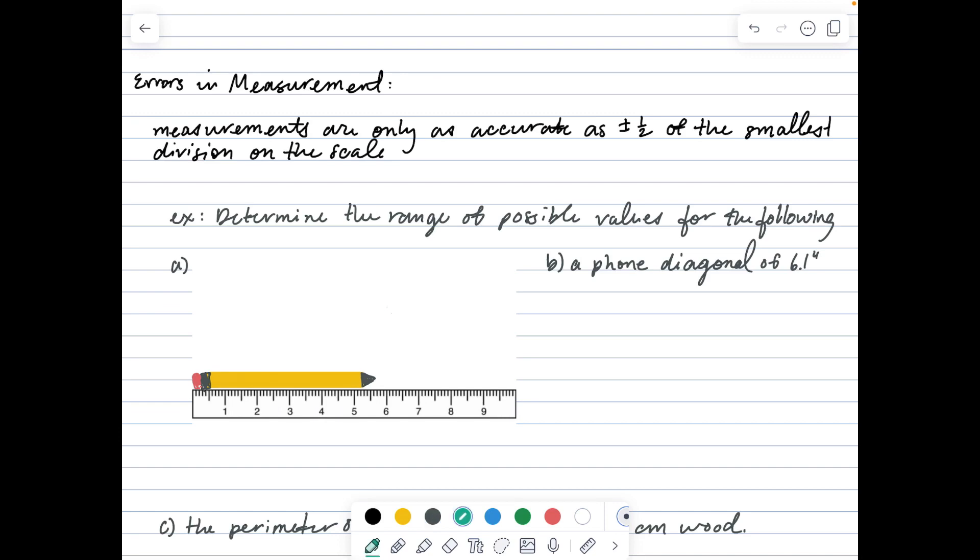The new part of this lesson is about errors in measurement. Nothing can be measured exactly because our tools of measurement are not precise enough. We can only be as precise in our measurements as our tools are. Our measurements are only as accurate as plus or minus half of the smallest division on the scale. Anything in between a half smaller or larger would round to that value.